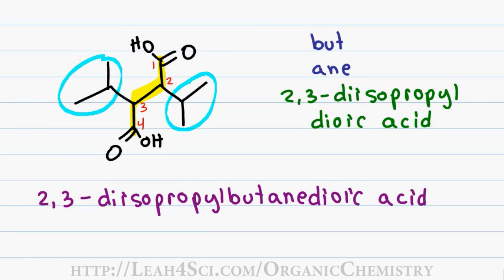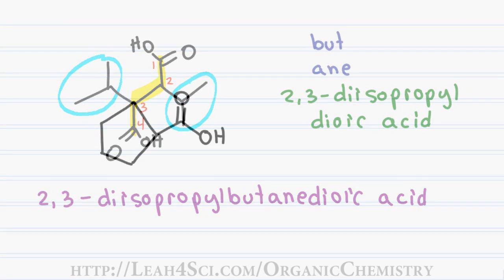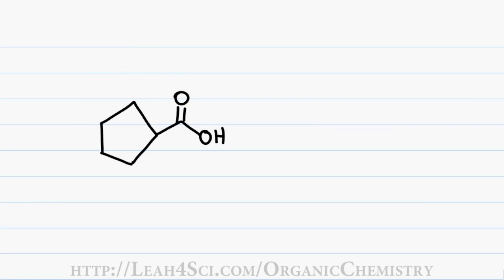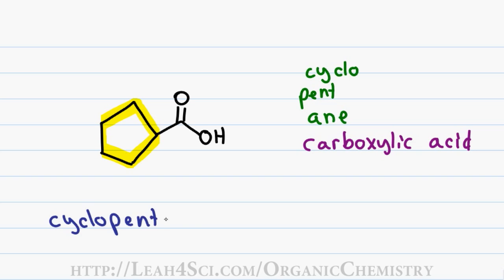When you have a carboxylic acid coming off a ring substituent, you simply name the ring as you would and then add the prefix carboxylic acid. In this case, I have a 5-membered ring giving me pent for 5 and cyclo for the ring, only single bonds gives me a last name of ane, and a carboxylic acid gives me the ending carboxylic acid. This gives me a final name of cyclopentanecarboxylic acid.